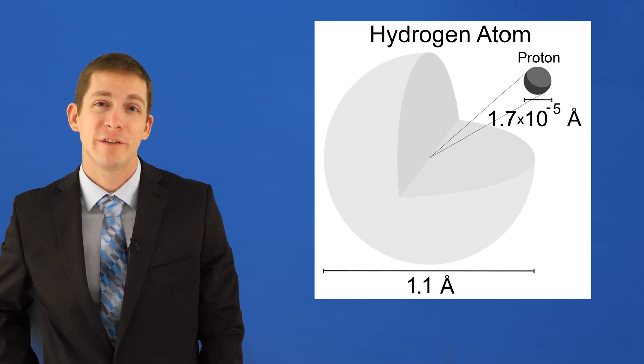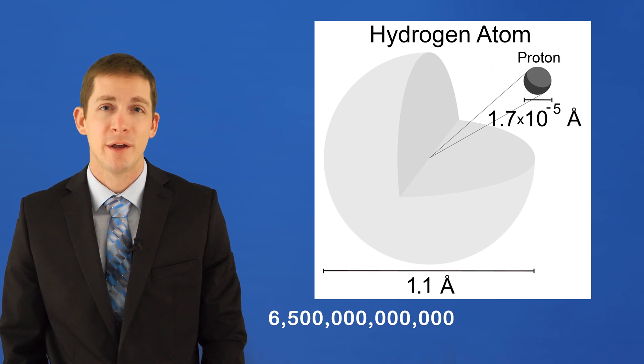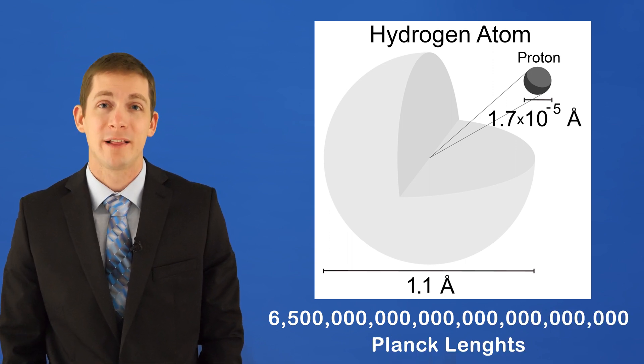Well, the diameter of a hydrogen atom is 6.5 trillion trillion Planck lengths, which is 6.5 septillion Planck lengths.